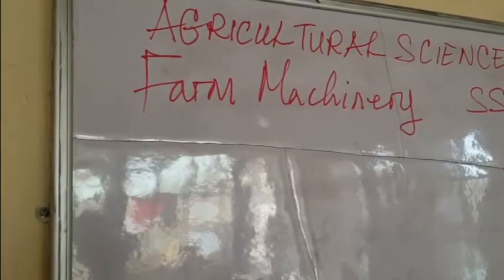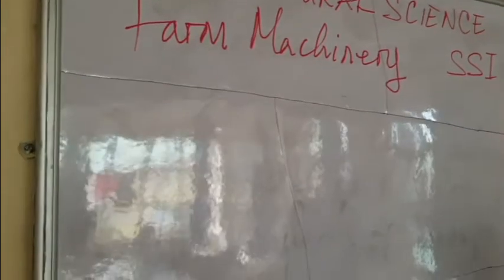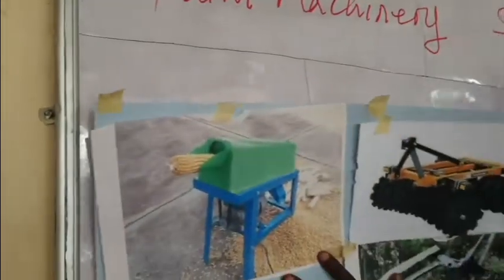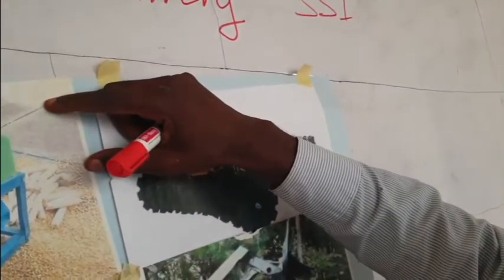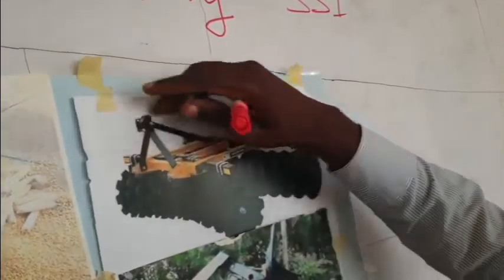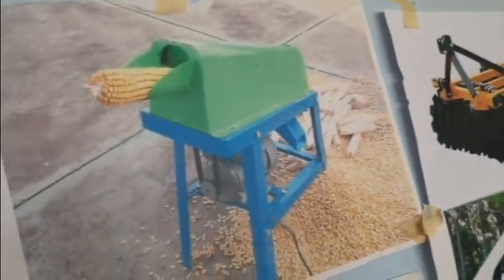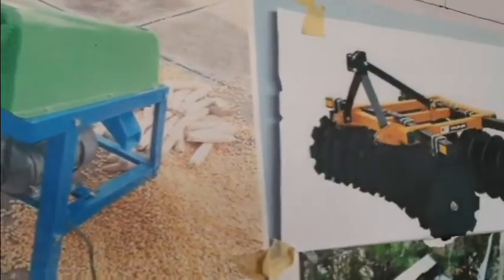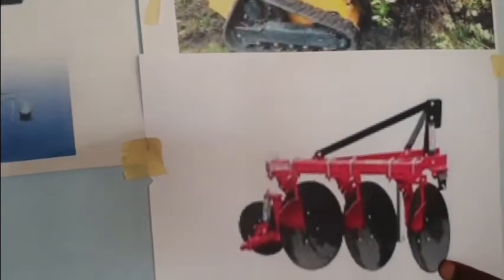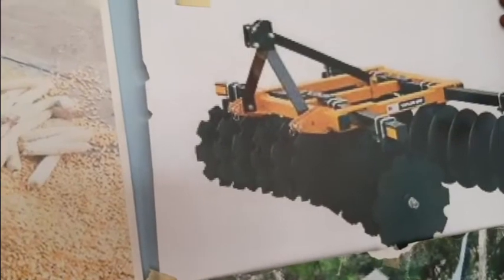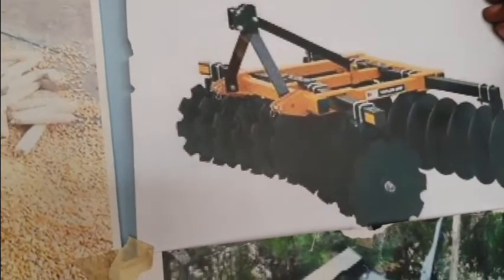I have pictures of some of the machines and implements. This is a maize sheller. This is a milking machine. This is a disc harrow. This is a tree puller, while this is a disc plow. This is a primary tillage implement; this one is a secondary tillage implement. You should be able to identify them anywhere you see them.